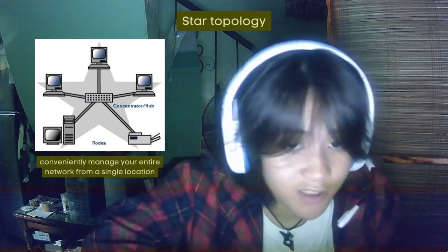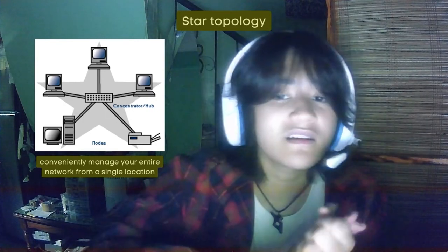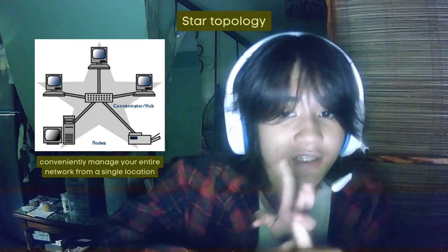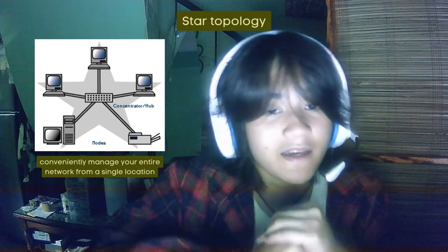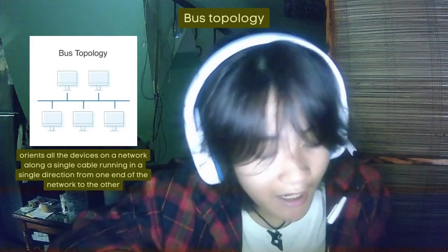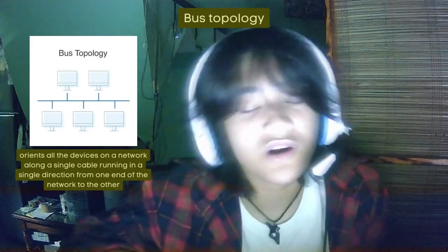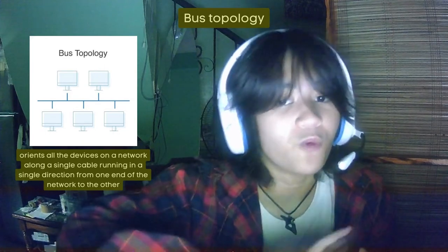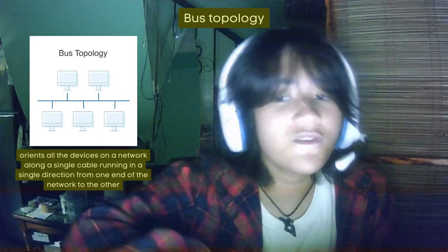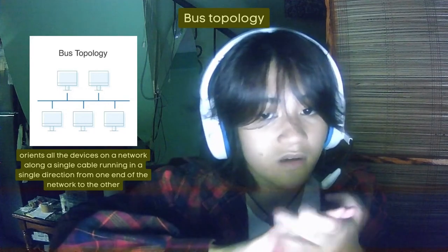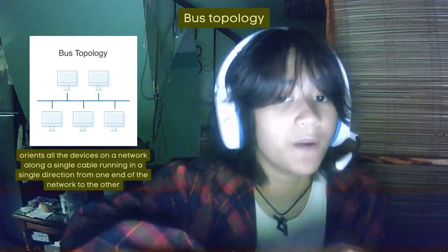First is star topology. All network components are physically connected to a central node such as a router, hub, or switch. In star topology, the central hub acts as the server and the connecting nodes act as clients. Second is bus topology, where all devices in the network are oriented along a single cable running in a single direction from one end of the network to the other. The flow of data also follows the route of the cable, moving in one direction — which is why it is sometimes called line topology or backbone topology.